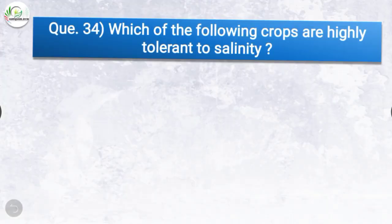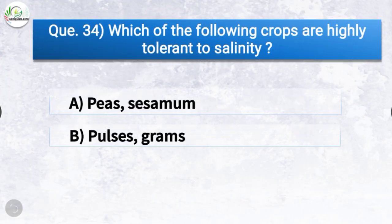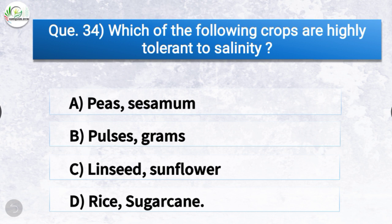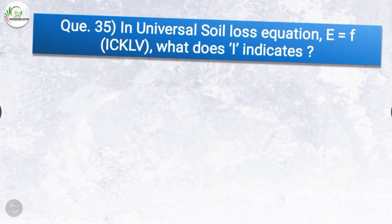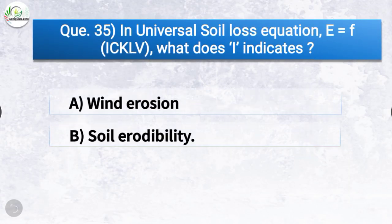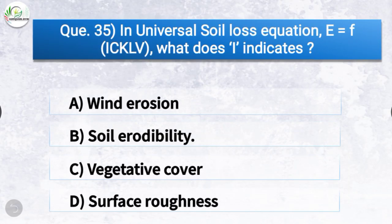Question number thirty-four: which of the following crops are highly tolerant to salinity? The correct answer is option D, rice and sugarcane. Question number thirty-five: in the universal soil loss equation, what does K indicate? The correct answer is option B, soil erodibility. K indicates soil erodibility.